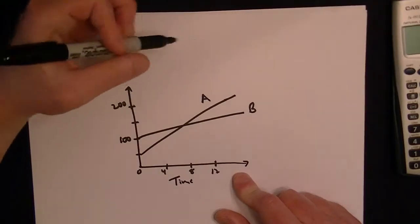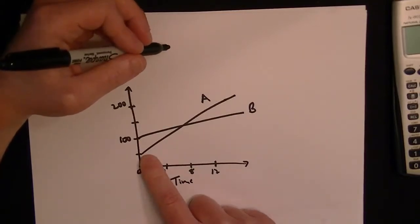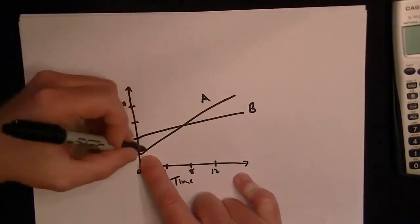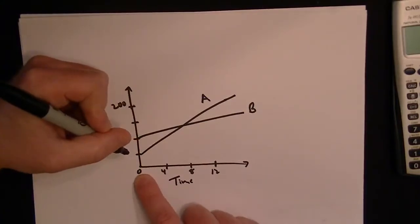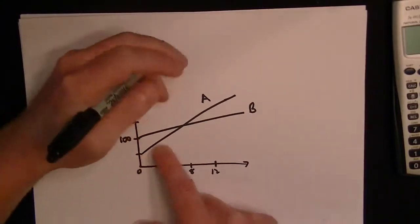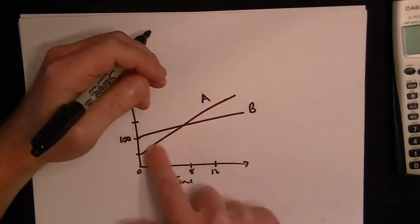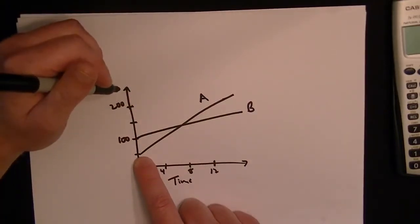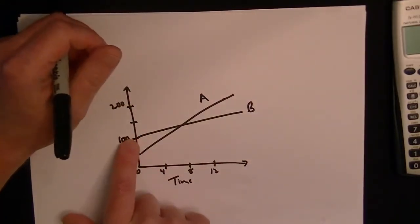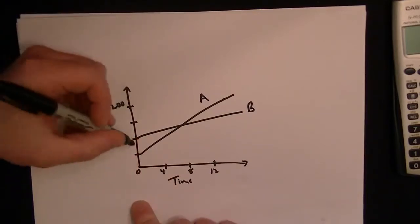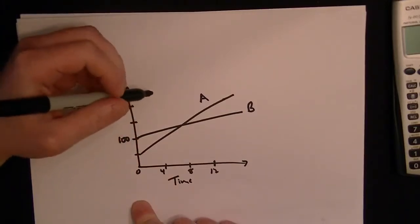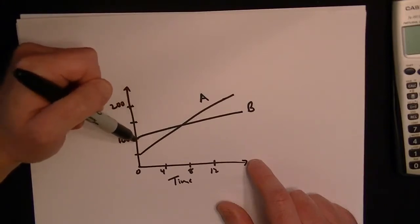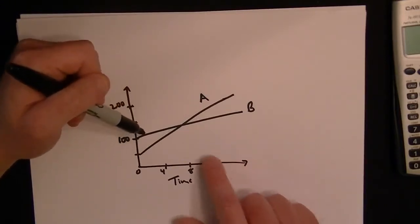The initial value is going to be when time equals zero. For A, which is this line here, A has a lesser value initially, and B is up here so it has a higher value initially. So we can say that B's initial investment is higher than A's.